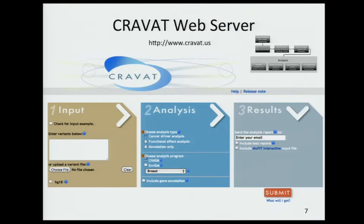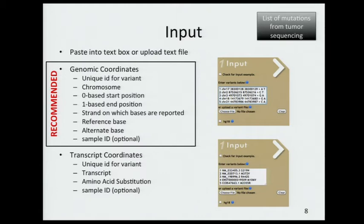Here is the interface of the CRAVAT server — the URL is at the top. There are three stages: input, analysis, and results. In the input stage, you input your mutations in genomic coordinates. You can also input transcript coordinates, but we really recommend genomic coordinates because we can do much better annotation that way.